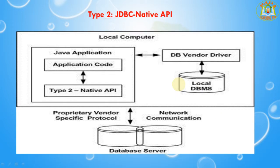Next I am going to discuss about Type 2 — the JDBC Native API driver. In Type 2, JDBC API calls are converted into native C or C++ API calls which are unique to the database. These drivers are typically provided by the database vendors and used in the same manner as a JDBC bridge. The vendor-specific drivers must be installed on each client machine. If we change the database, we have to change the native API since it is specific to the database. They are mostly obsolete now, but you may realize some speed increase with Type 2 because it eliminates the ODBC driver layer.